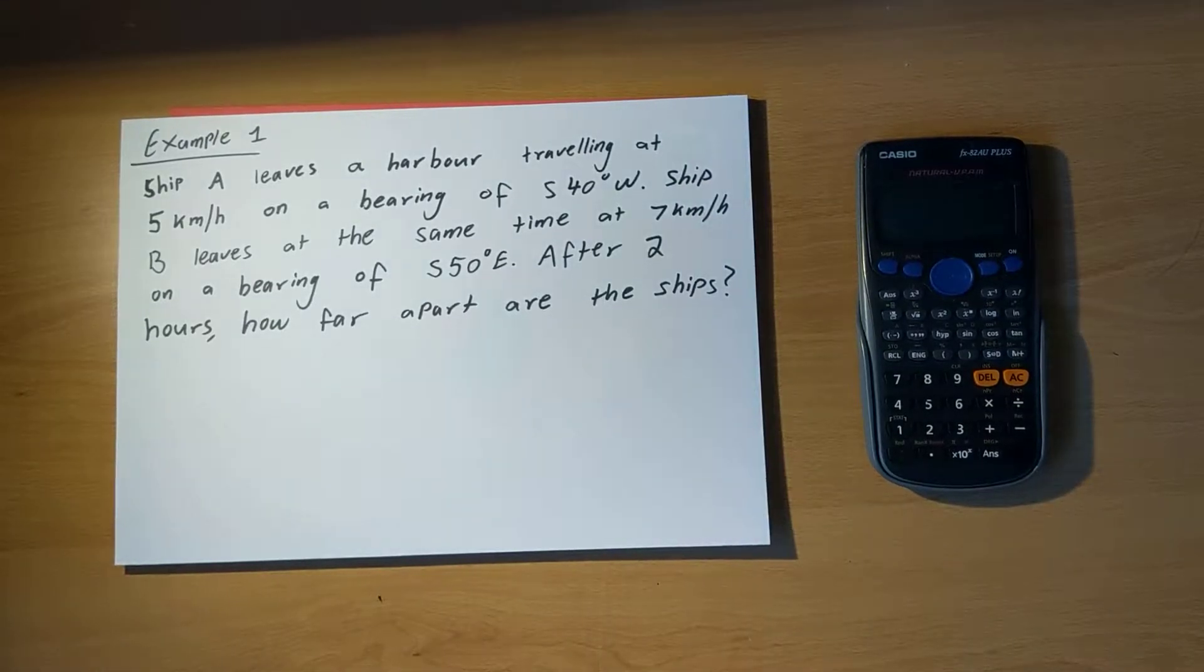Let's do two quick examples of questions involving bearings and angles of elevation and depression. The first example here is ship A leaves a harbour travelling at 5km an hour on a bearing of south 40 degrees west.